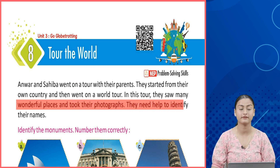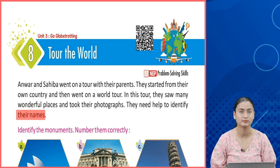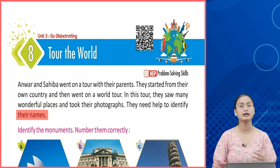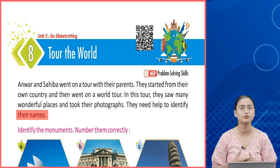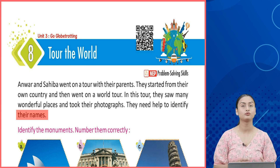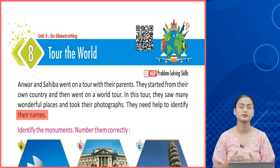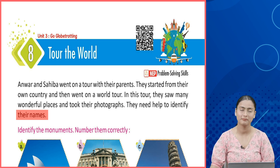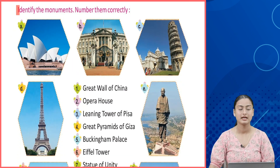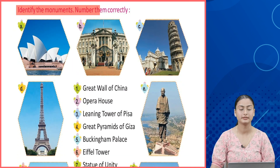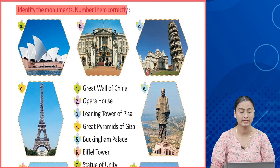They need help to identify the names of the places. When they visited different countries, they clicked different photographs. Now they need help. Let's start — identify the monuments and number them correctly.